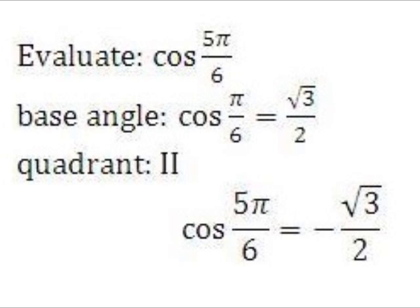Since 5 pi over 6 is less than pi, but greater than pi over 2, it is in the second quadrant. In this quadrant, only sine is positive. But since we're evaluating at cosine, our final answer is negative square root of 3 over 2.